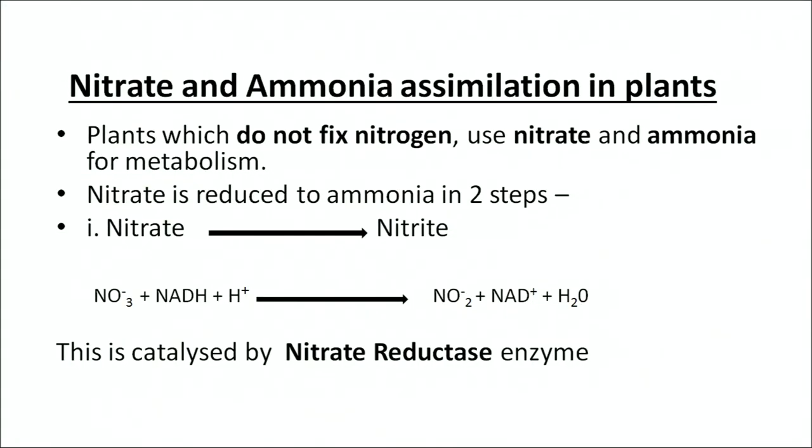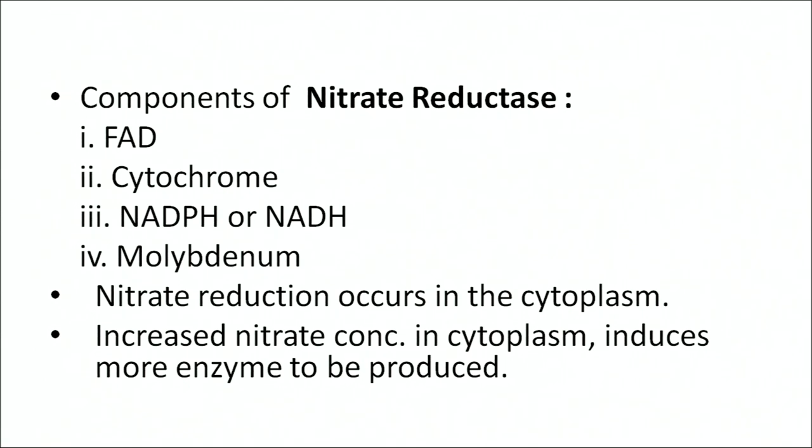This is how nitrate and ammonia get assimilated in plants. Plants which do not fix nitrogen use nitrate and ammonia for metabolism. This happens in two steps. First, nitrate is converted to nitrite — the equation involves NADH and requires the enzyme nitrate reductase. Components of nitrate reductase include NAD, FAD, cytochromes, NADPH or NADH depending on the condition, and molybdenum. Nitrate reduction occurs in the cytoplasm, and increased nitrate concentration induces more enzyme production, making it an auto-controlled process.